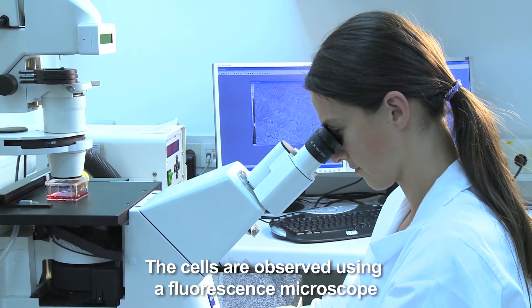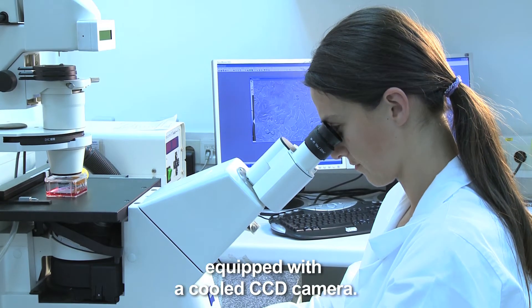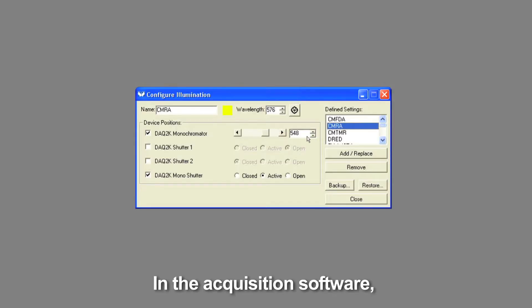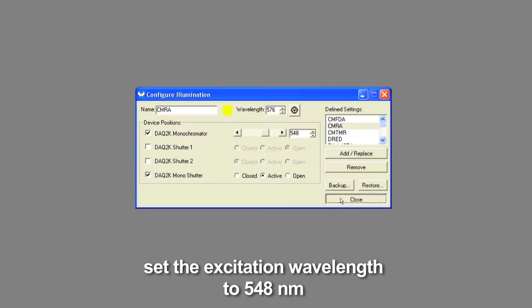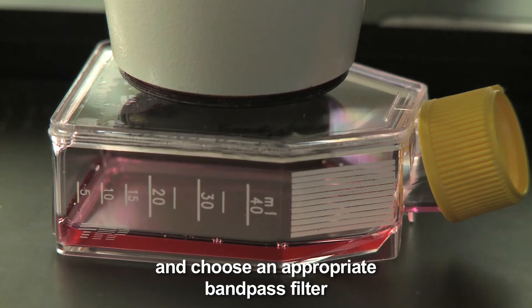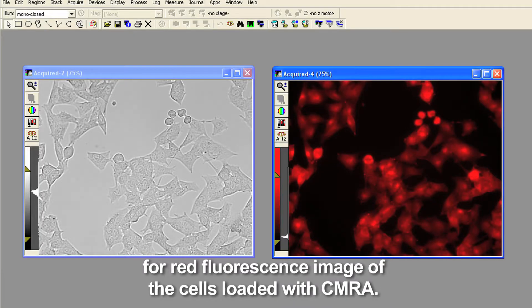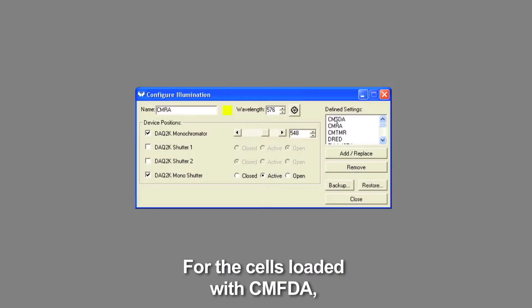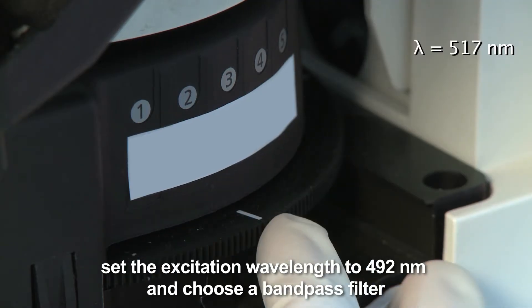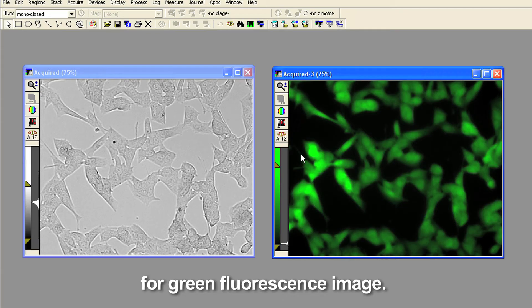The cells are observed using a fluorescence microscope equipped with a cooled CCD camera. In the acquisition software, set the excitation wavelength to 548 nanometers and choose an appropriate bandpass filter for a fluorescence image of the cells loaded with CMRA. For the cells loaded with CMFDA, set the excitation wavelength to 492 nanometers and choose a bandpass filter for green fluorescence image.